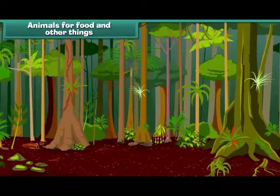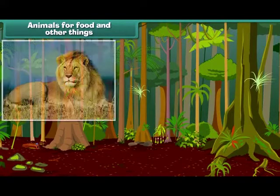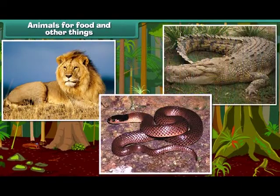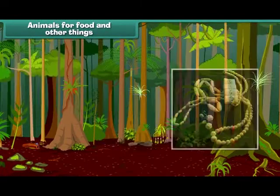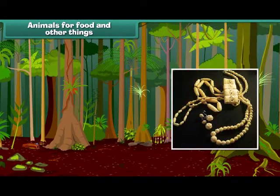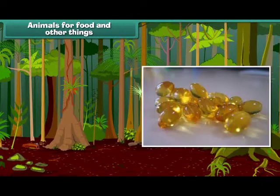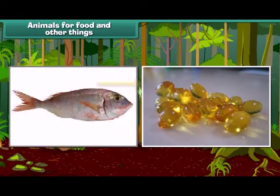Wild animals are useful to us. We get fur and leather from animals like lion, snake, and crocodile. Beautiful ornaments and show pieces are made from elephant teeth. The oil extracted from the liver of some fishes is used in medicines.